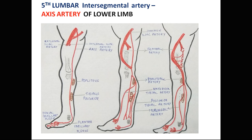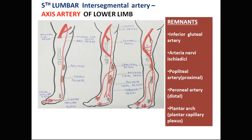The fifth lumbar intersegmental artery forms the axis artery of the lower limb. The arterial trunk accompanies the sciatic nerve and runs distally along the dorsal surface of the thigh, knee, and leg, ending in the plantar capillary plexus. In the adult, the remnant of the axis artery persists as the inferior gluteal artery, the artery to the sciatic nerve, the proximal part of the popliteal artery in line with the longitudinal anastomosis formed by the perforating branches of the profunda femoris artery, and also the distal part of the peroneal artery.